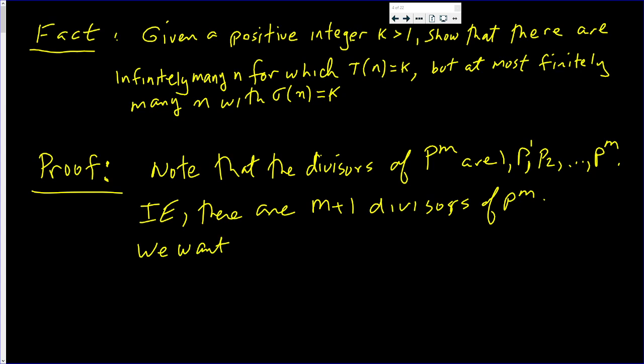We want the number of divisors to equal k. Oh, no big deal. Let m equal k minus 1. Then, tau of p to the k minus 1 is equal to k.